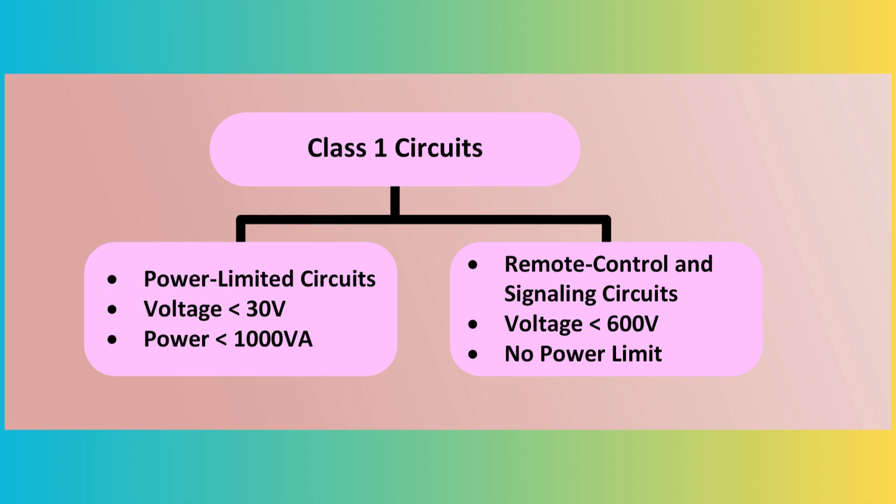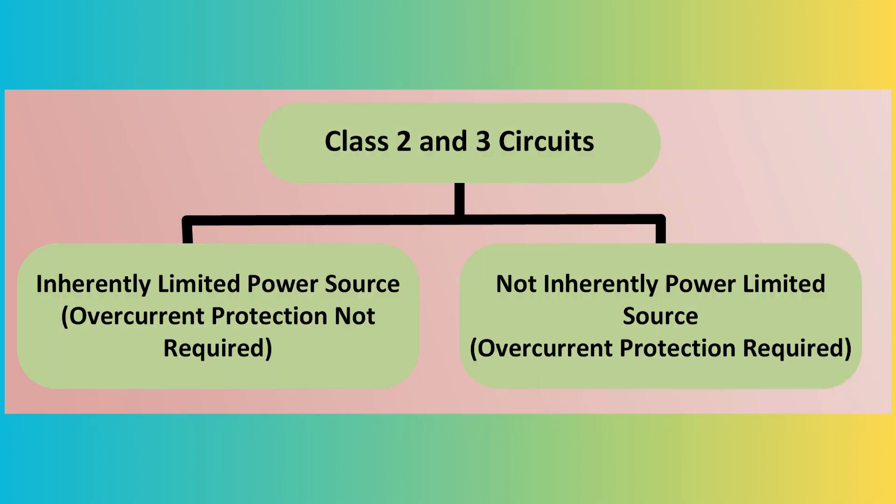Article 725 categorizes circuits into three classes based on power limitations: Class I, Class II, and Class III. Class I circuits are further divided into power-limited Class I circuits and remote-control and signaling Class I circuits. A common application of a Class I control circuit is the operating coil for a magnetic motor starter or lighting contactor. If the power levels specified for Class I circuits are exceeded, stricter material and installation requirements must be followed.